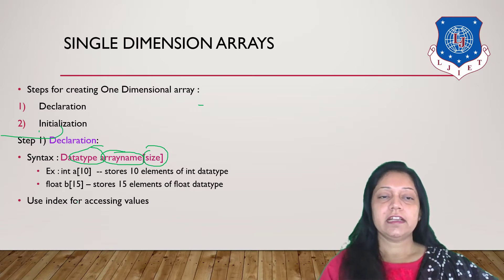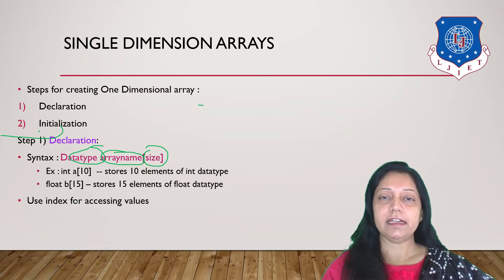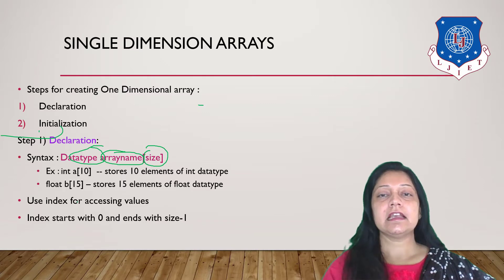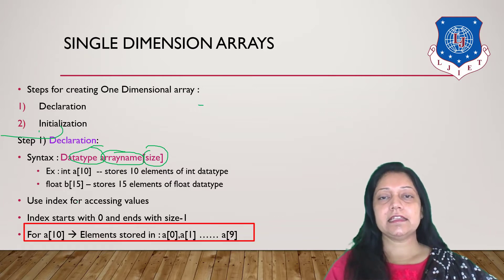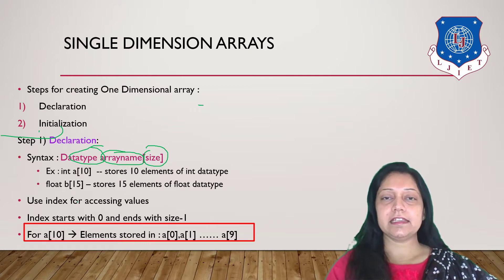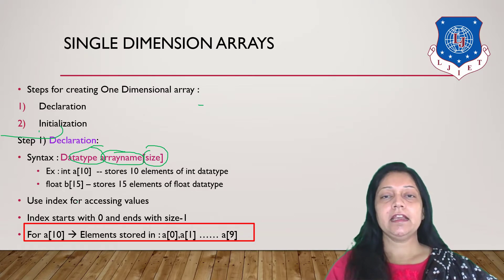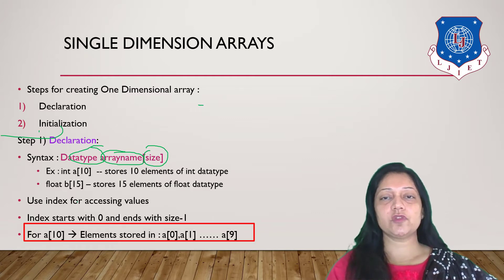After declaration, to access values we use the concept of indexes. In arrays, indexes always start with 0 and the last index is size minus 1. For example, if the array is 'a' with size 10, the first value is stored at a[0], the second at a[1], the third at a[2], and the last value at a[9], since 10 minus 1 is 9.